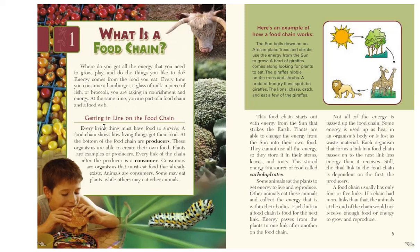Getting in line on the food chain. Every living thing must have food to survive. A food chain shows how living things get their food. At the bottom of the food chain are producers — organisms that are able to create their own food, namely plants, through photosynthesis. Plants are examples of producers.